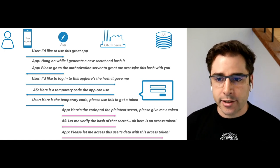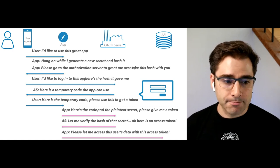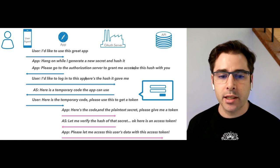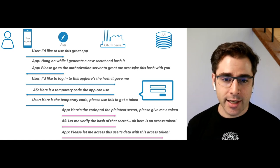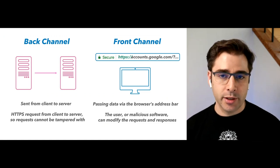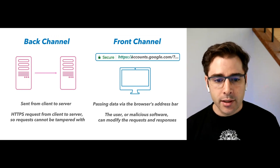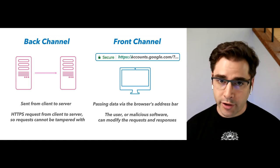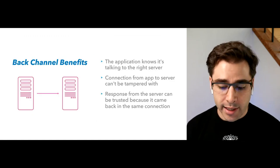There are two different colored lines here representing the difference between the front channel and the back channel. The front channel uses the address bar of the user's browser to move data between two machines. The back channel is a normal HTTP request from a client to a server. The key benefit of the back channel is that the application actually knows it's talking to the right server because it's making an HTTPS request — it's secure, encrypted, and the response comes back on the same connection. I like to think of that as hand-delivering a message where you can see who they are and confirm they received it.